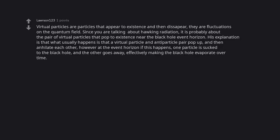Virtual particles are particles that appear to exist and then disappear — they are fluctuations on the quantum field. Since we are talking about Hawking radiation, this is probably about the pair of virtual particles that pop into existence near the black hole event horizon. The explanation is that a virtual particle and anti-particle pair pop up and then annihilate each other. However, at the event horizon, one particle is sucked into the black hole and the other goes away, effectively making the black hole evaporate over time.